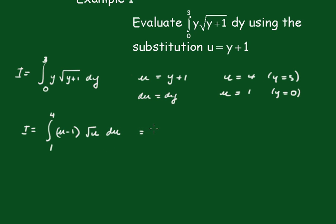Now we'll change this to u to the half. So we have the integral from 1 to 4 of u minus 1 times u to the half du, and that equals, removing the brackets, u to the 3 over 2 minus u to the half du.